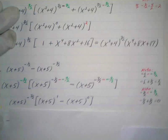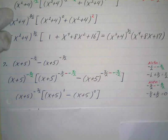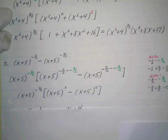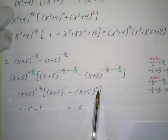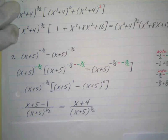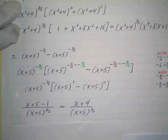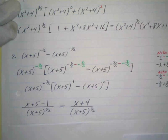Anything to the one power is just itself, and anything to the zero power is just one. So I've got x plus five to the one — which is just x plus five — and x plus five to the zero is one. Then I put the negative exponent in the denominator so it becomes positive, which gives it height rather than length. Five minus one is four, so there's your final answer: x plus four over x plus five to the three-halves.